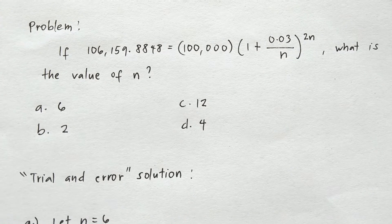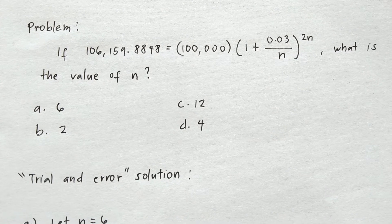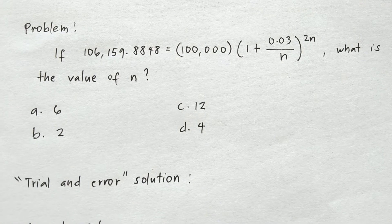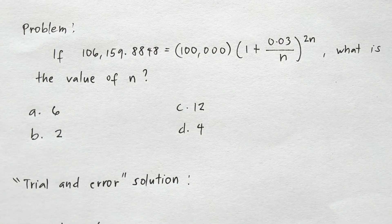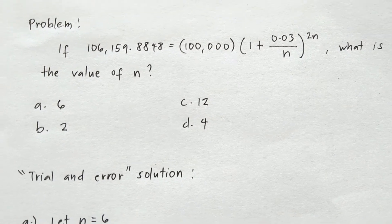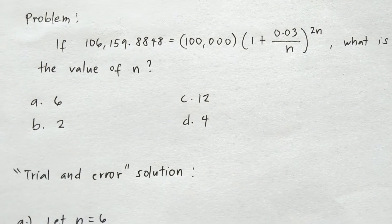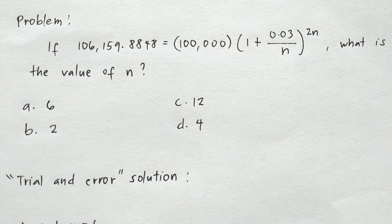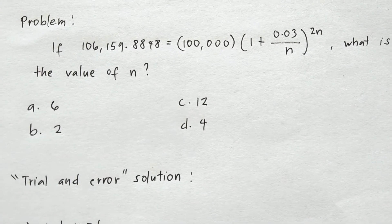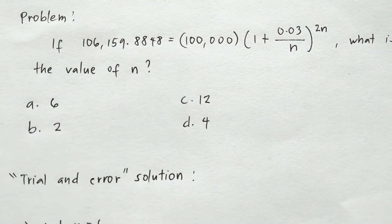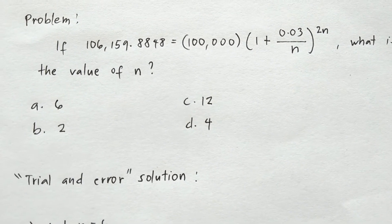Take note that the frequent values of your n are always 6, 2, 12, and 4. We have n equals 6 if you mean compounded bimonthly.